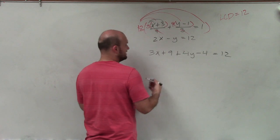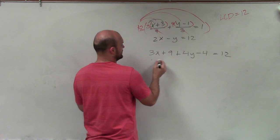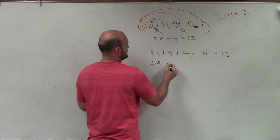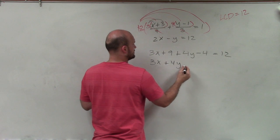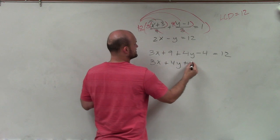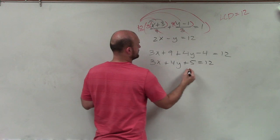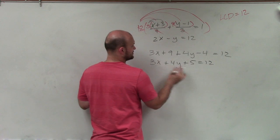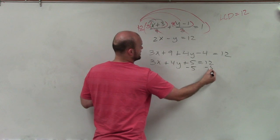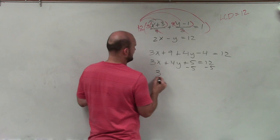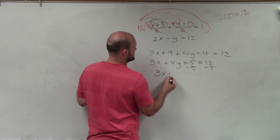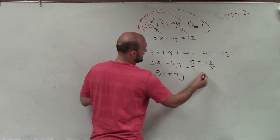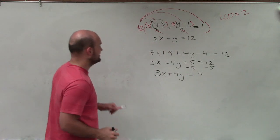Then I can combine these two, so I have 3x plus 4y plus 5 equals 12. I only want to get the x and y's by itself, so I subtract 5 from both sides. My final equation is 3x plus 4y equals positive 7.